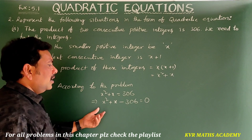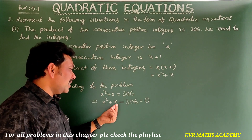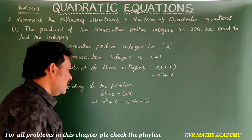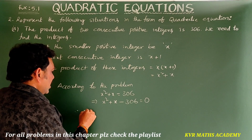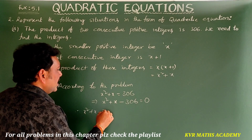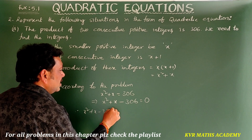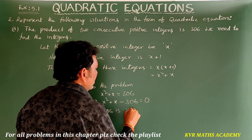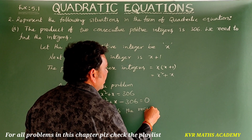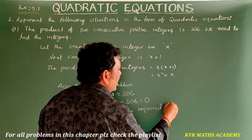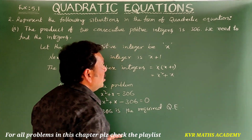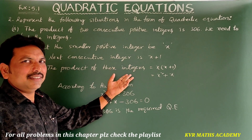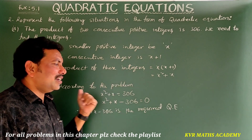This equation is now in the form ax² + bx + c = 0. Therefore x² + x − 306 = 0 is the required quadratic equation to find the positive integers. Understood clearly — note it down.